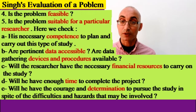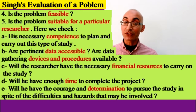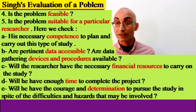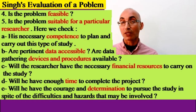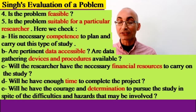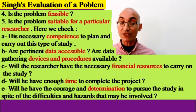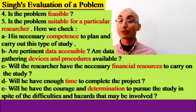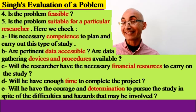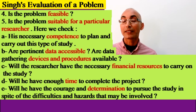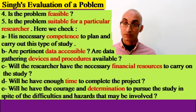Is the problem suitable for this particular researcher? We check the researcher's level, ability, and readiness to deal with this research. Sometimes the researcher's level does not allow them to handle a very complex or multidisciplinary problem. We need to check their necessary competence to plan and carry out this type of study — for example, they may handle descriptive research but not experimental research. This should be checked before continuing with other steps.